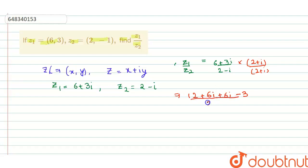So it will be 12 minus 3, 9 plus 12 iota upon 2 minus minus 1, that is plus 1. So it will be 9 plus 12 iota upon 3. So it comes out to be 3 plus 4 iota. So our required answer is 3 plus 4 iota.